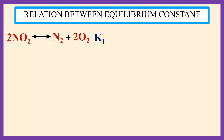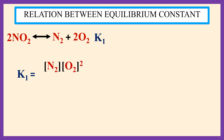K₁ is equal to the concentration of N₂ multiplied by the square of the concentration of O₂, divided by the square of the concentration of NO₂.